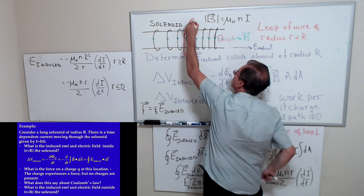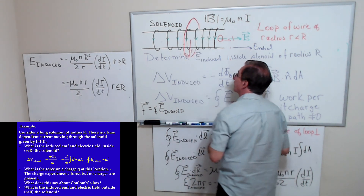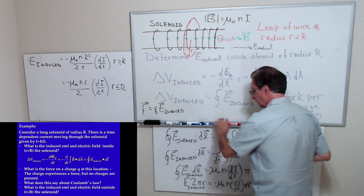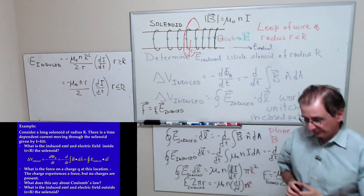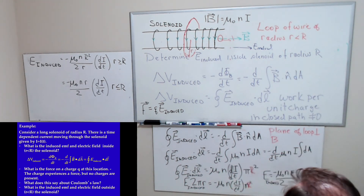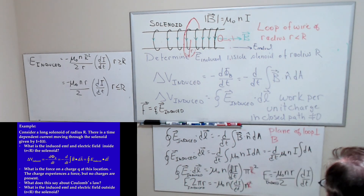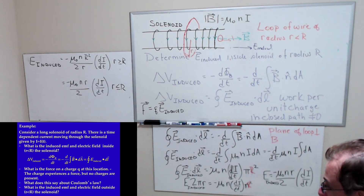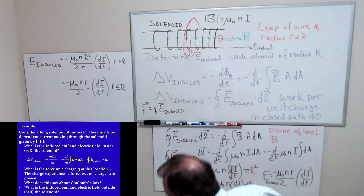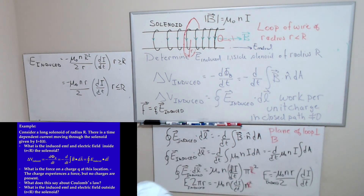The only thing I changed when doing this for r greater than R was the integration limits, because the field is confined within the solenoid. There's no field outside, so there's no reason to integrate beyond radius R — there's no flux going through that outer part of the loop. I hope this more complete description helps to better understand this problem. Thank you.